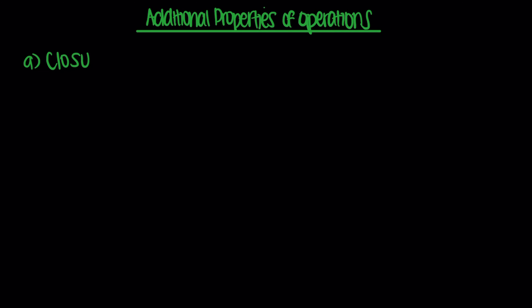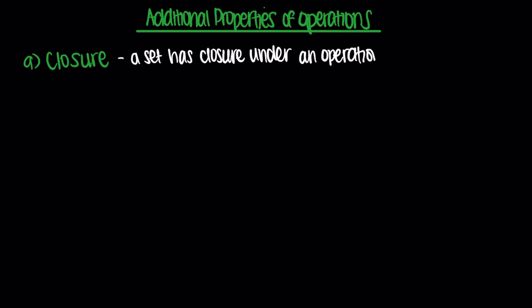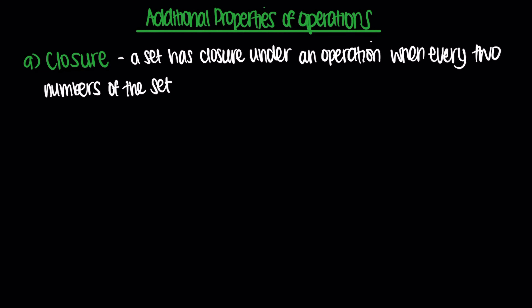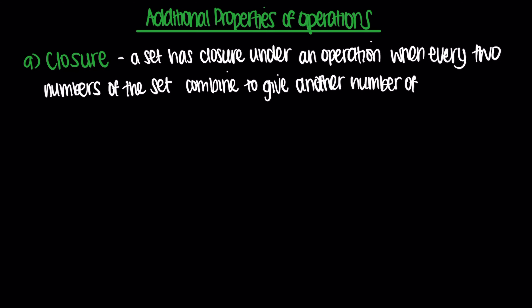The first one we look at is closure. We say a set has closure on an operation when every two numbers of the set combine to give a number of the same set.